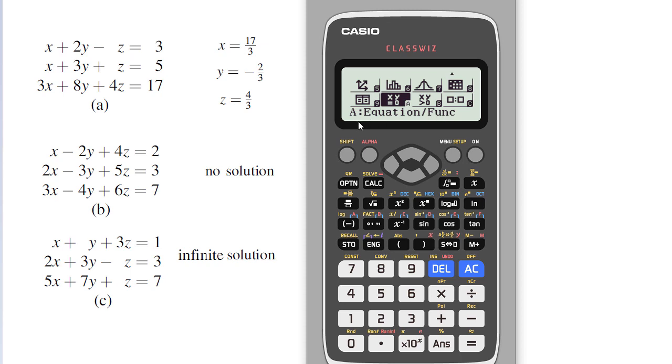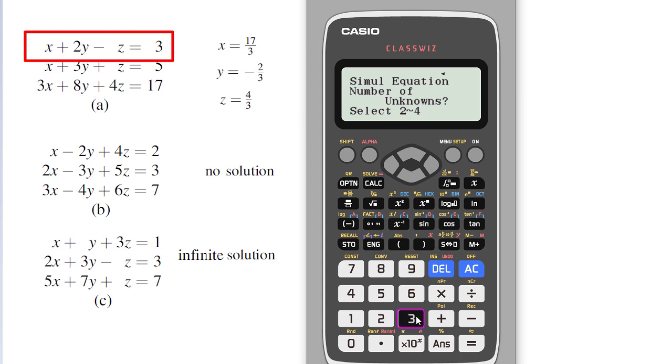To select equation or function I have to press A. I need to solve the simultaneous equations, I will press 1. So now how many unknowns are here? I have x, y and z. I will select 3.